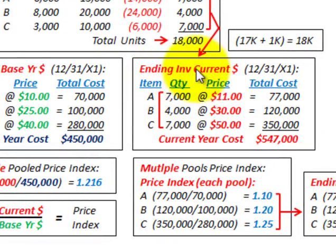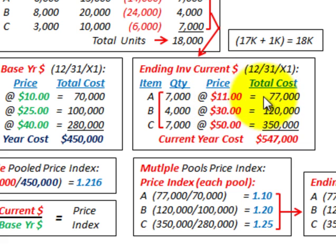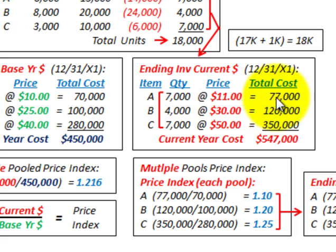For our ending inventory at current year dollars, same thing — we take our ending inventory for items A, B, and C, each times the purchase price paid during the year. Quantity times price equals total cost, and that gives us our ending inventory at current year dollars. For the single pooled method, we total all of A, B, and C, coming up with a current year cost here of $547,000.